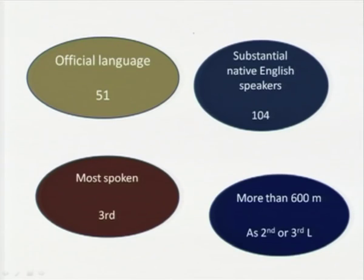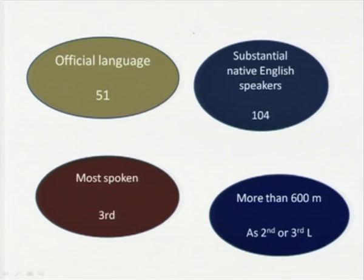We should know that English is the official language in 51 countries and has substantial native speakers in 104 countries. It is the third most spoken language in the world, and more than 600 million people have English as a second or third language.